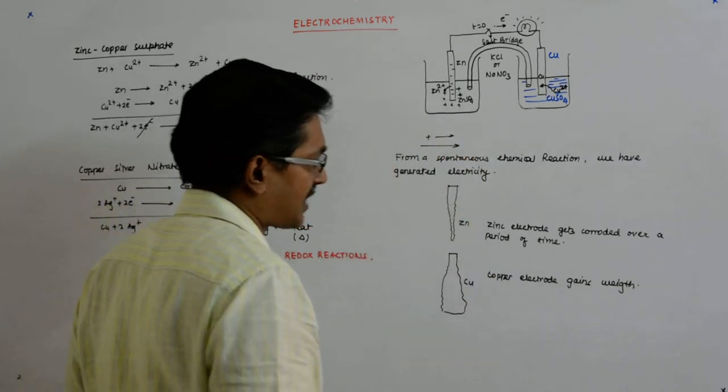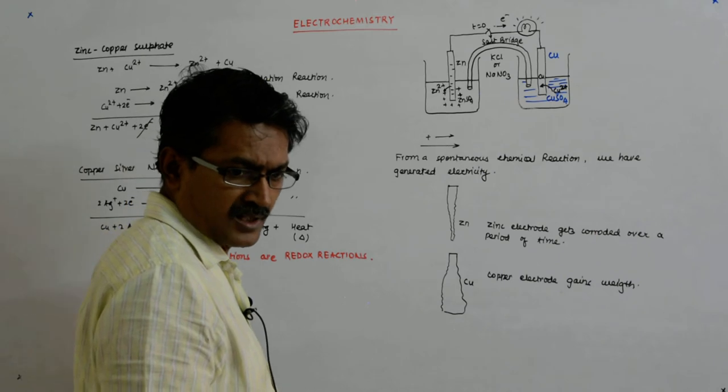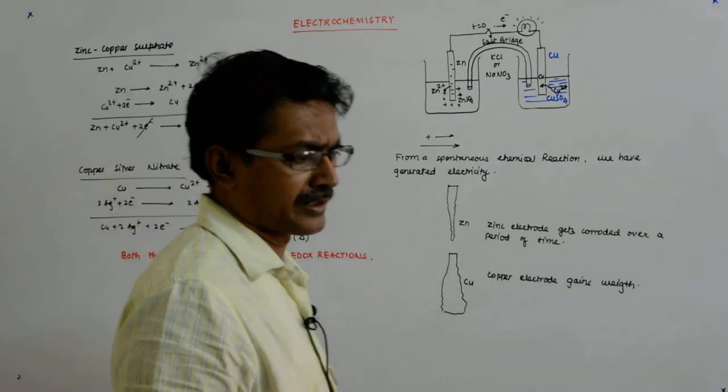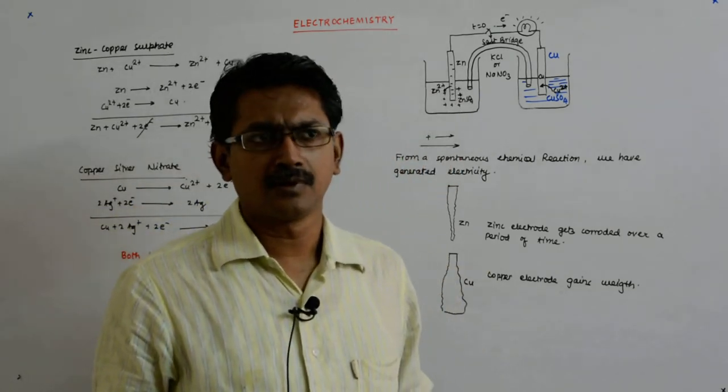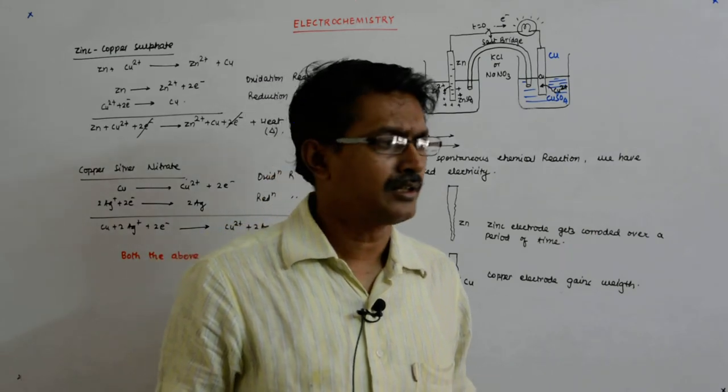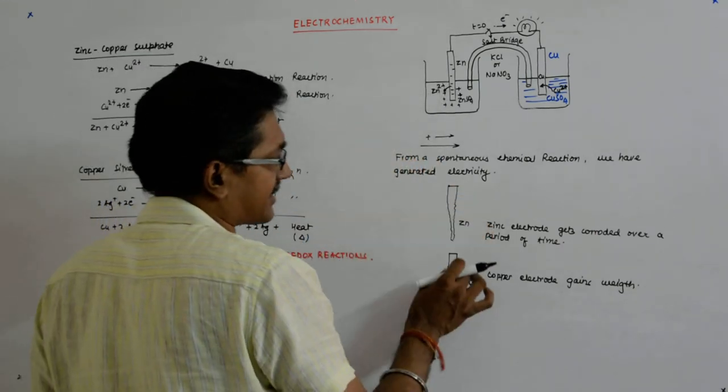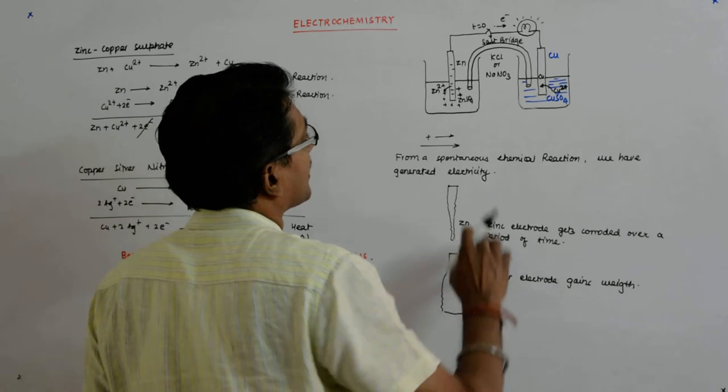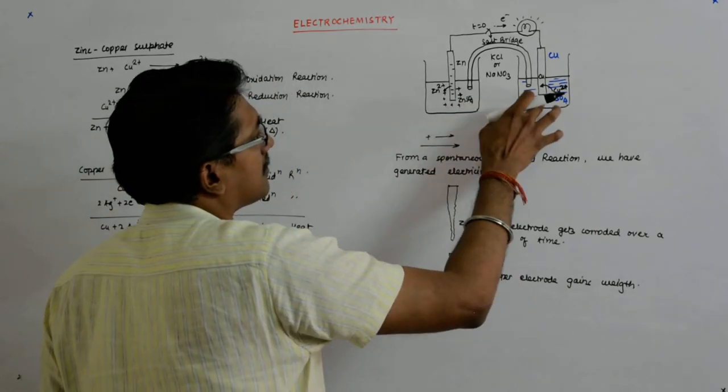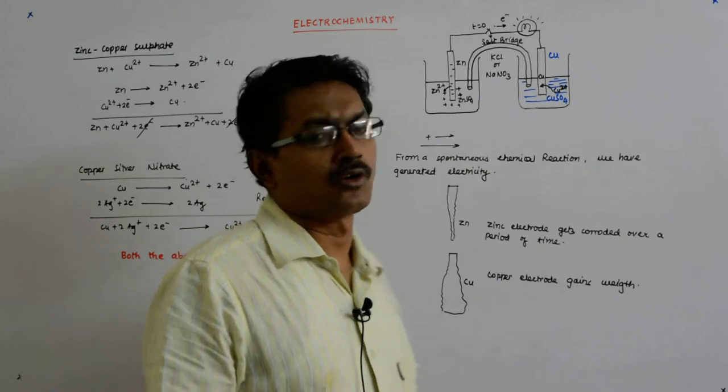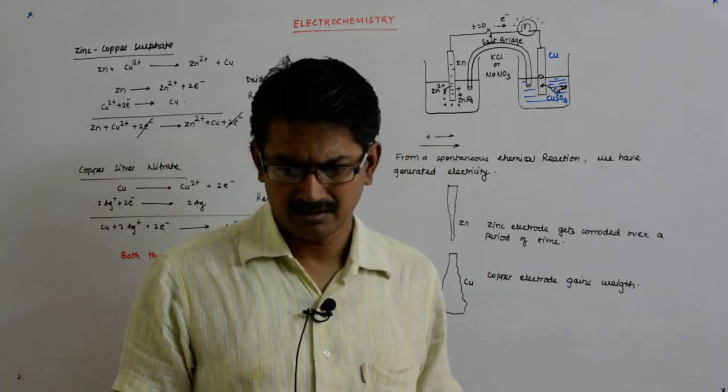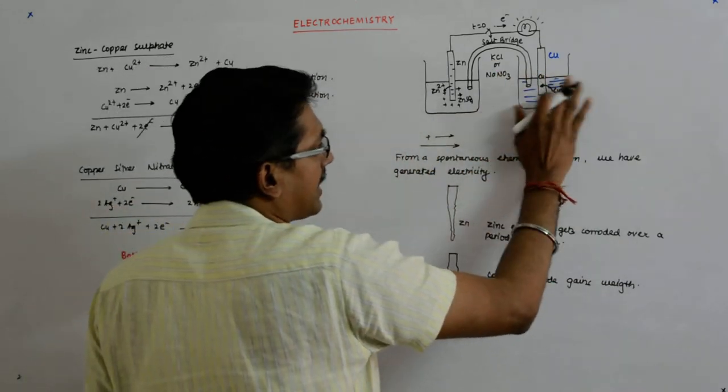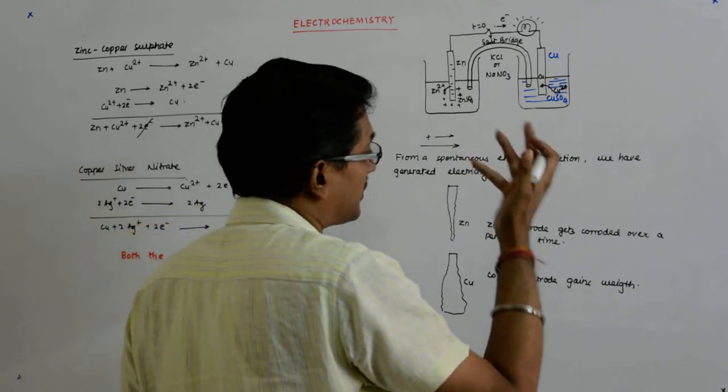And the process will keep on continuing till either the electrode gets fully corroded or here you have no more copper ions—no more copper ions here, so all have got deposited here. And this will start becoming fainter and fainter till it becomes almost white.